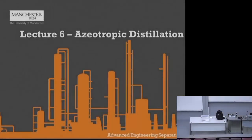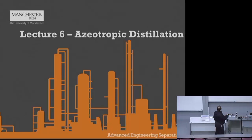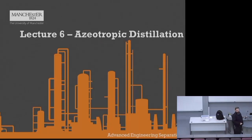We essentially want to move on to how we deal with and understand these systems when they're not so ideal — when they don't have this constant relative volatility. And in fact, the worst case scenario for us in terms of distillation is when they have azeotropes.